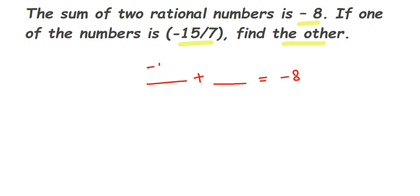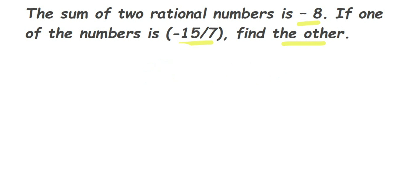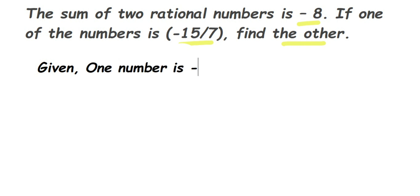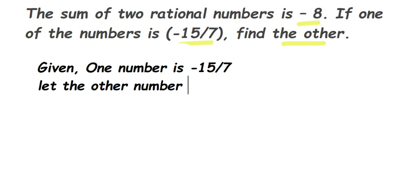One number is -15/7 and we have to find out the other number. Since the other number is unknown, we are going to assume a variable x in place of the other number. So let the other number be x — you can take a variable x or a, it's completely up to you. We frame this as: (-15/7) + x = -8.